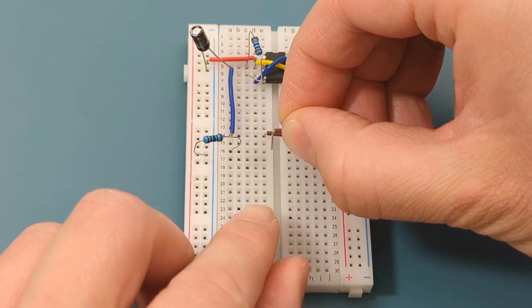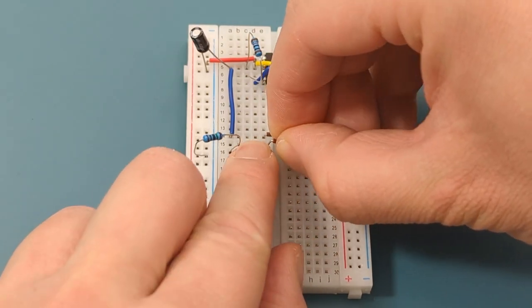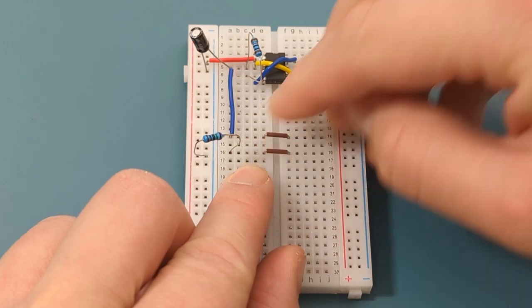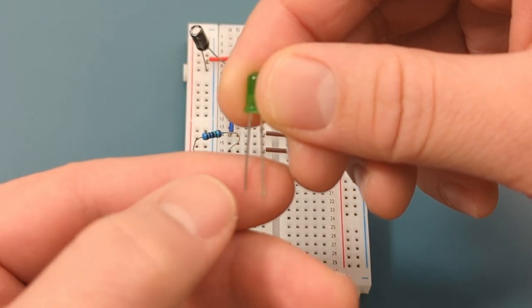Insert another jumper wire to connect the left and right sides of the breadboard. This jumper wire is in row 16, two rows below the previous one. Insert a green LED in row 14 and row 16. The longer leg is in row 16.